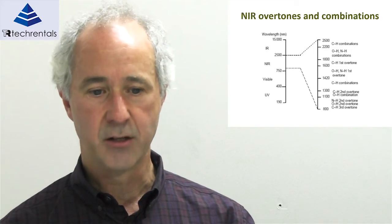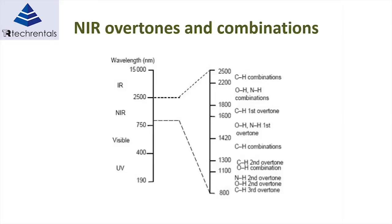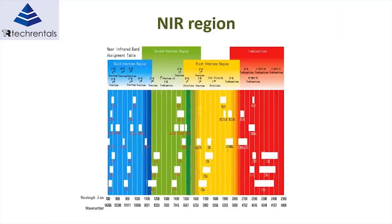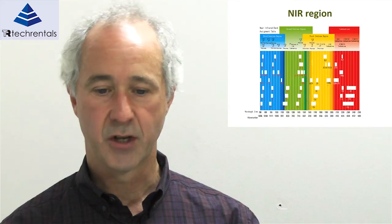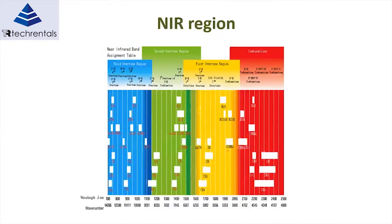Here we've expanded the wavelength range of interest for NIR, from around 800 nanometres to 2,500 nanometres. On the right-hand side you can see the combination bands and overtone bands of the CH, NH, and OH molecules broken down. For water, for example, there are combination bands at 2,200 nm, a first overtone at 1,900 nm, a second overtone at roughly 1,350 nm, and two third overtones.